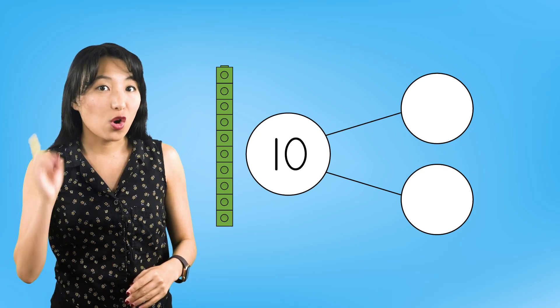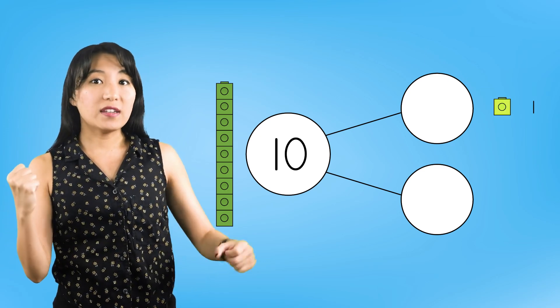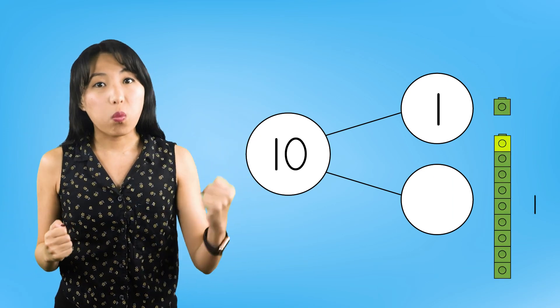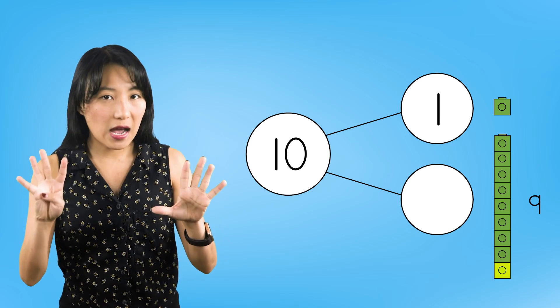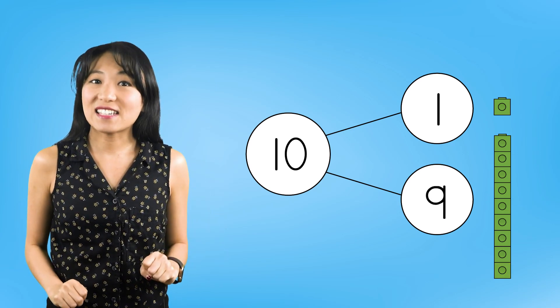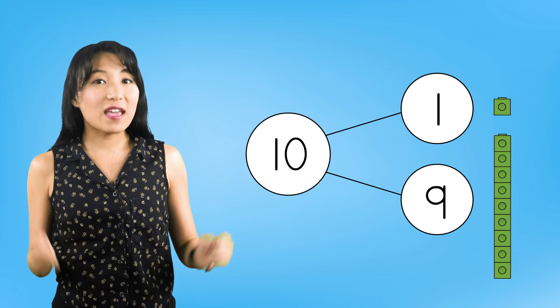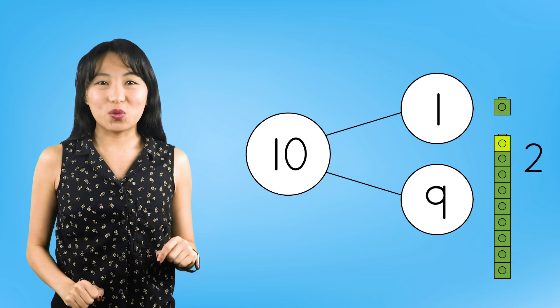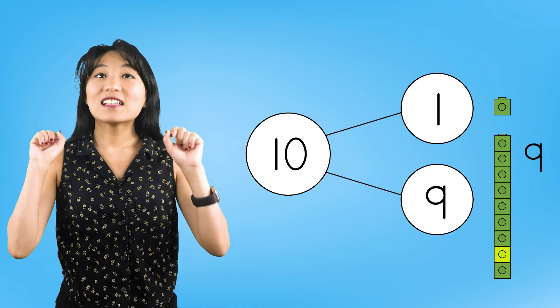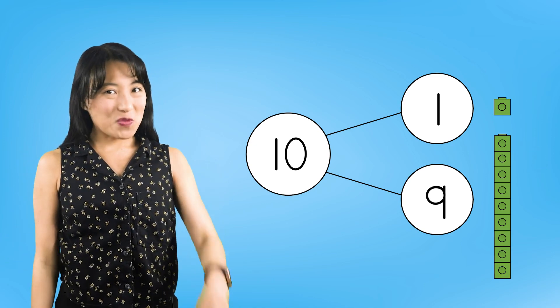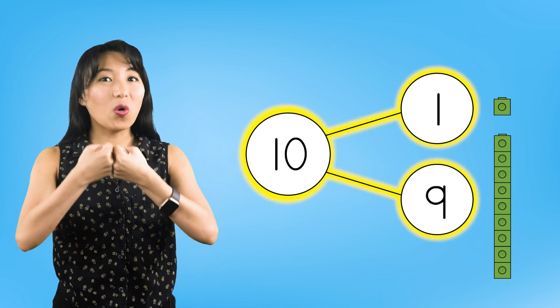So, one part has 1 and the other part has 1, 2, 3, 4, 5, 6, 7, 8, 9. This part has 9. Let's count the parts together and make sure that they make the whole. 1, 2, 3, 4, 5, 6, 7, 8, 9, 10. Now, we are sure that 1 and 9 make our whole 10.